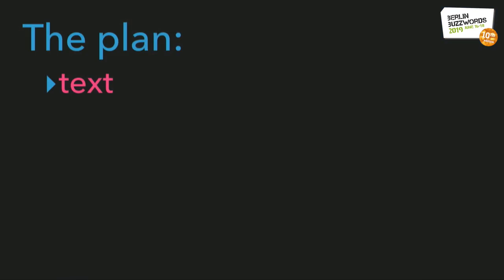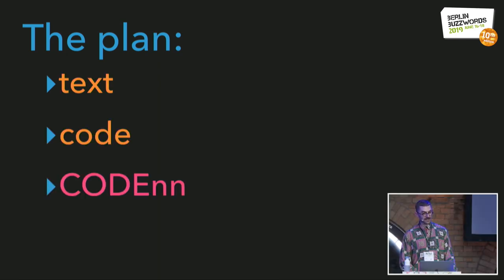First, we'll talk about vector representations of natural language, and in particular how we can go from representations for words to representations of documents. Second, we'll talk about how the same idea can be used to create vector representations of code. Third, we'll talk about how we can learn these two representations simultaneously through what's called a joint embedding, and what the authors call the Code Description Embedding Neural Network, or CodeNN.